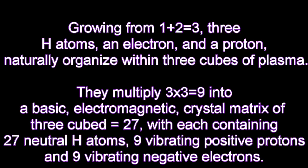Growing from one plus two equals three — three hydrogen atoms — an electron and a proton naturally organize into three cubes of plasma. They multiply three times three equals nine into a basic electromagnetic crystal matrix of three cubed equals 27, with each matrix containing 27 neutral hydrogen atoms, nine vibrating positive protons, and nine vibrating negative electrons.